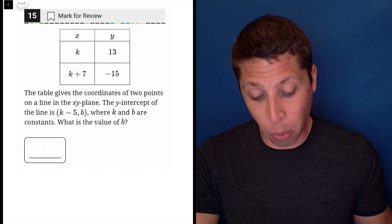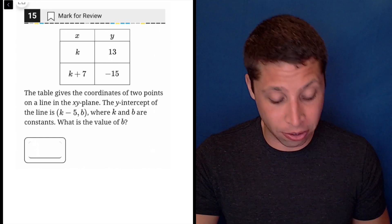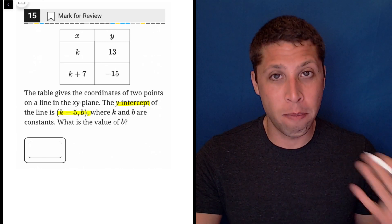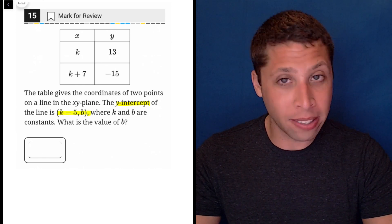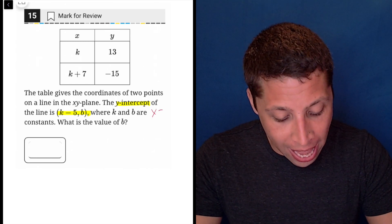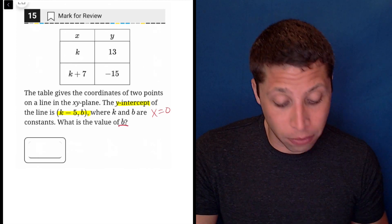So they're giving us some points here, they're kind of half points because of this k. But the thing that draws my attention first is the y-intercept of the line is k-5b. Well that's way less scary than it sounds because every single y-intercept has an x-coordinate of zero. So the b is still the y-intercept, that's what I'm solving for.